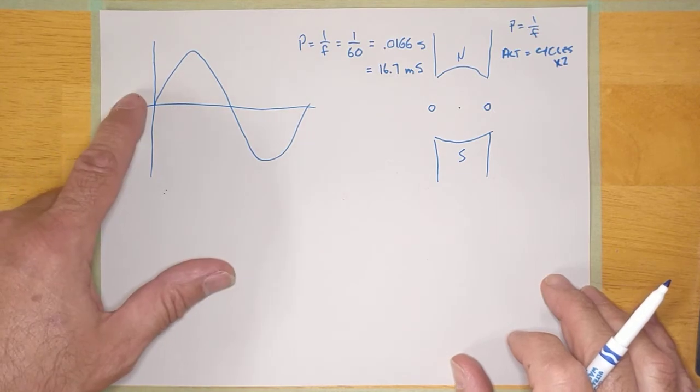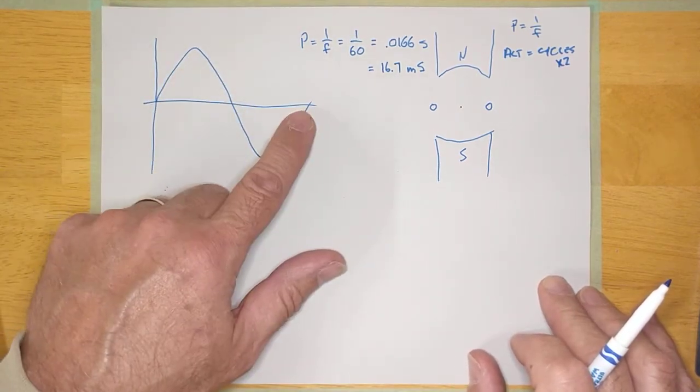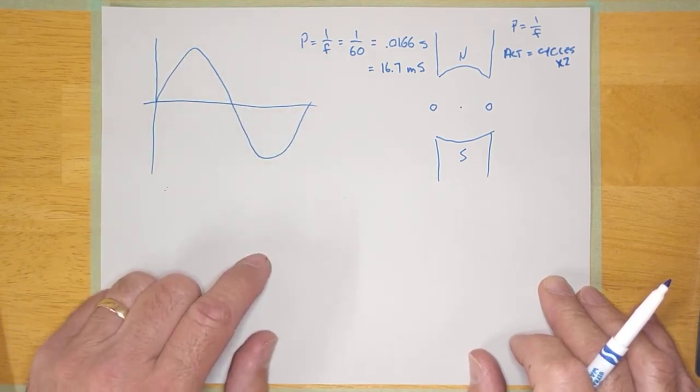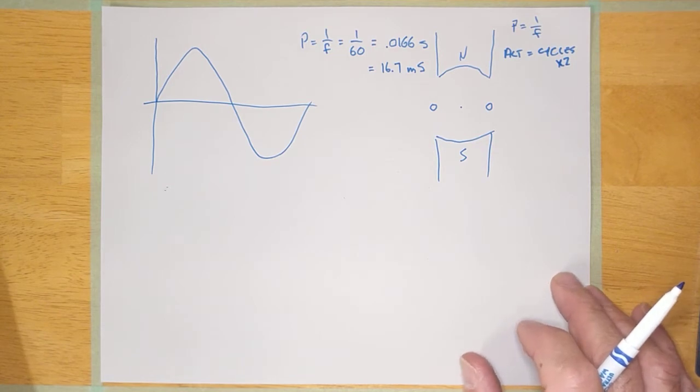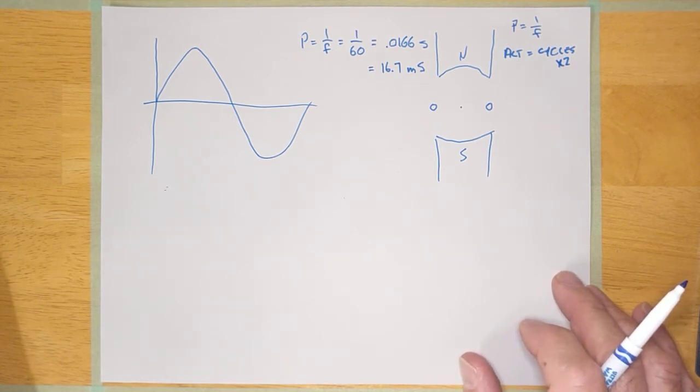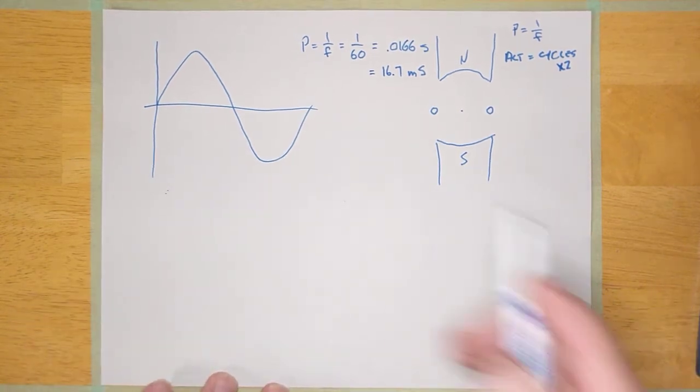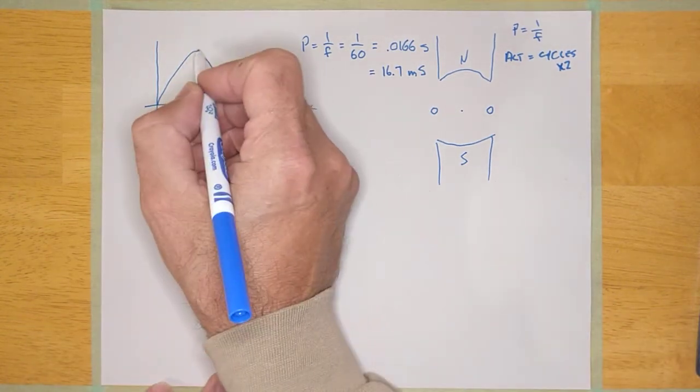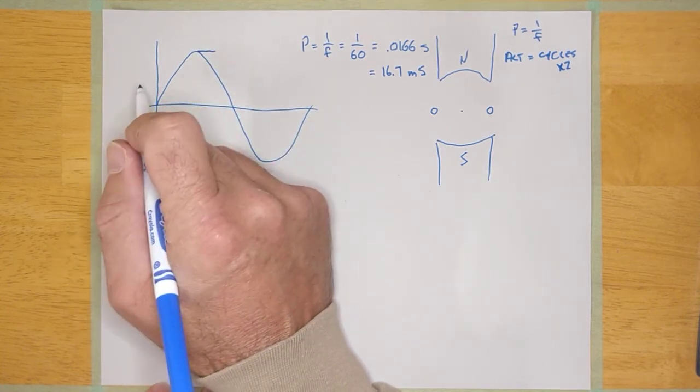All right, so we've defined a cycle. We've defined the period. We've defined an alternation. Let's talk about just a couple more things here, and that is, we know this is an alternation here. So what do we call this voltage here where it's maxing out or peaking?